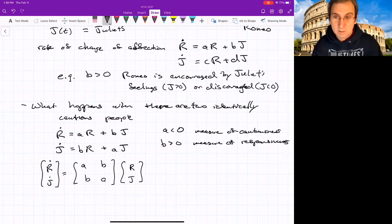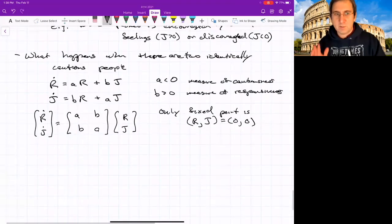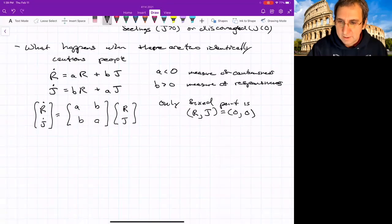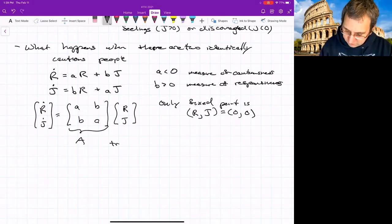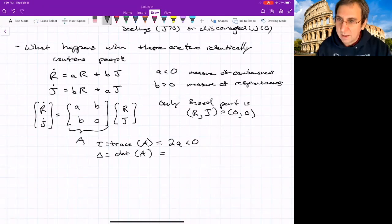The only fixed point is zero, zero. So we'll just do a phase plane analysis of this. So it will never settle down to anything. It could only grow in affections or who knows. We have to see what's going on. If we were to get the trace and the determinant, this is A, trace of A is 2A, and that's less than zero. Delta is the determinant of A, and that is A squared minus B squared.